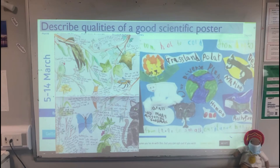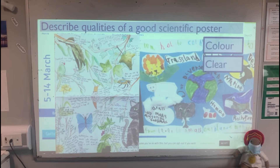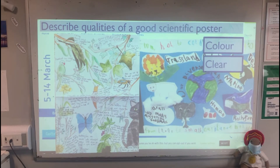Here are two examples for you. Pause the video — I'll give you two keywords to start you off. Can you try and aim for five qualities that you think a scientific poster has? Try and write it in four sentences. For example, you could say a good scientific poster has a range of colours and clear information. Try and aim for about five. Pause the video and have a go.